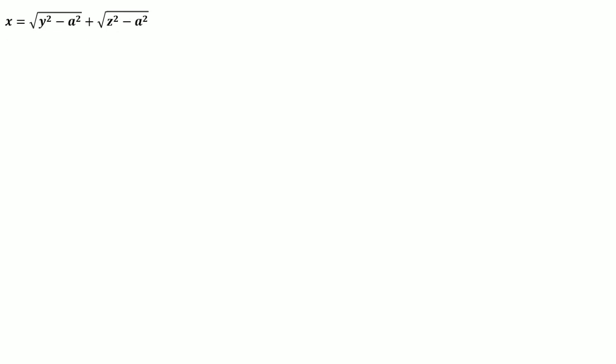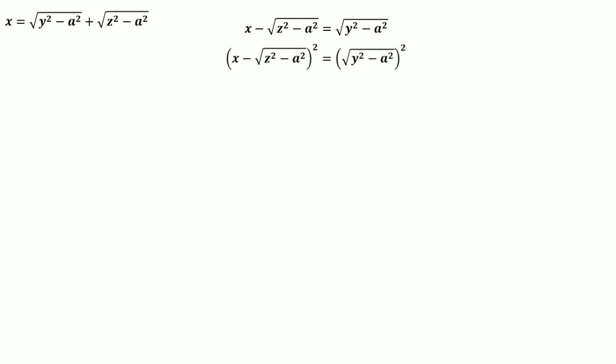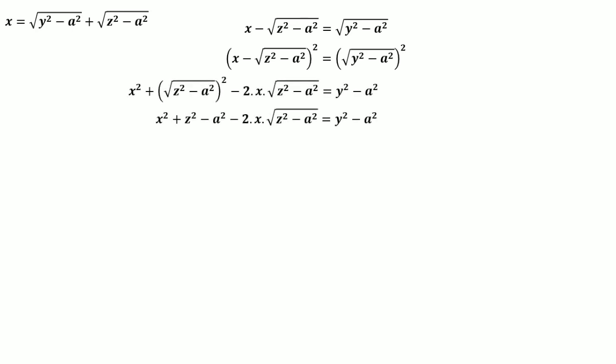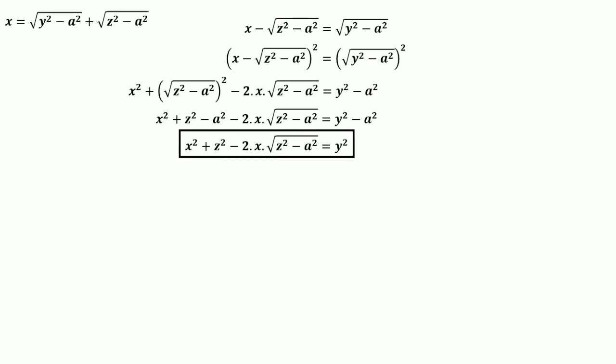Considering the x equation, subtracting the square root of (z² − a²) from both sides and squaring. Using the (a + b)² formula, we get x² + z² − a² − 2x·√(z² − a²) = y² − a². Adding a² to both sides gives x² + z² − 2x·√(z² − a²) = y². Call this Equation 1.